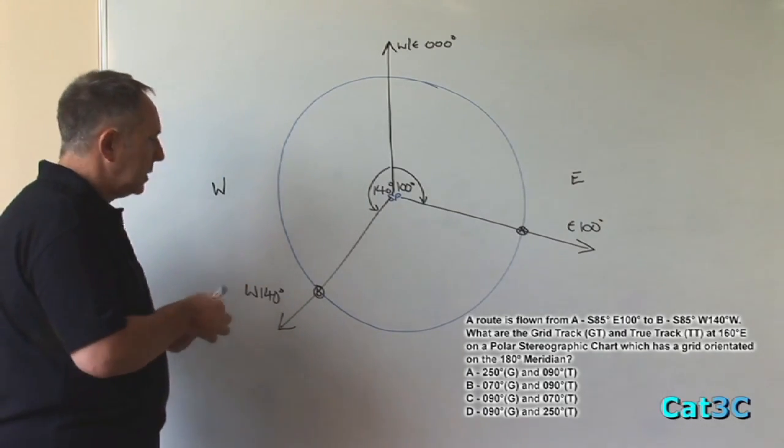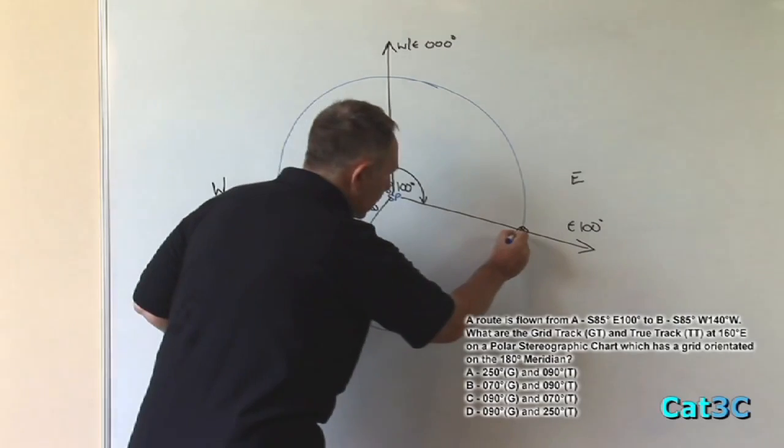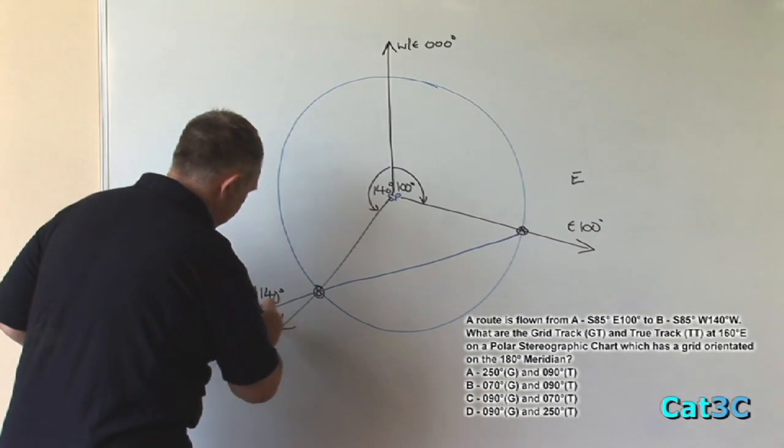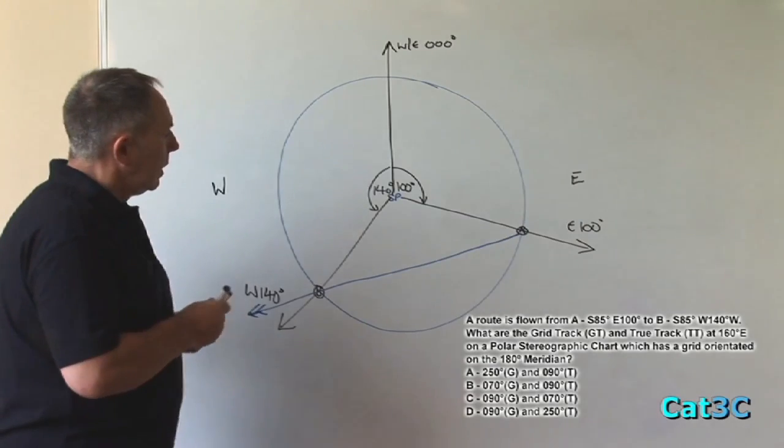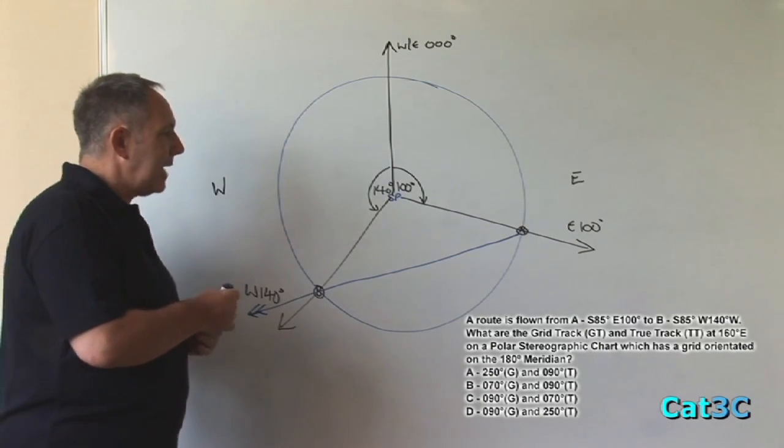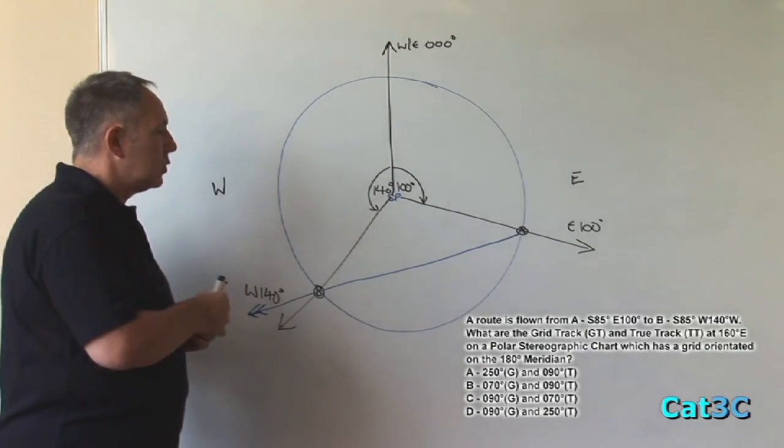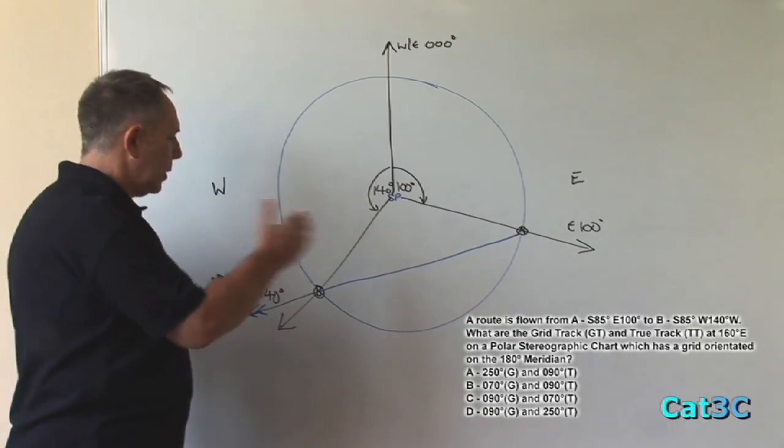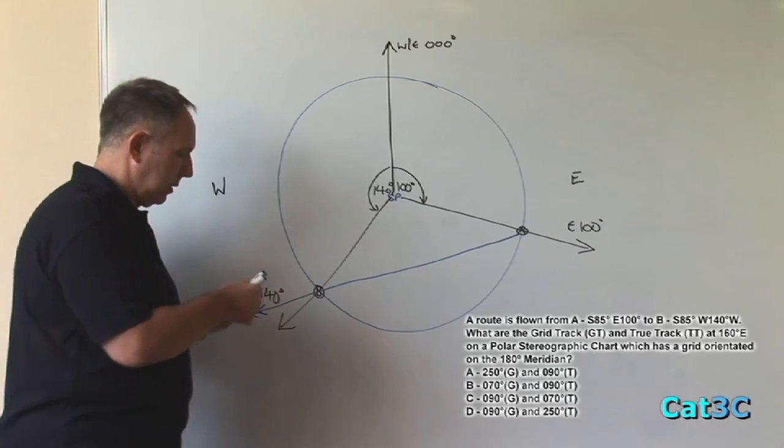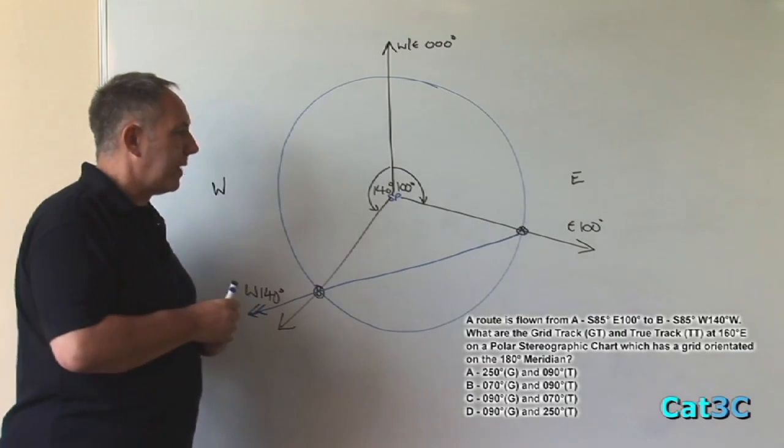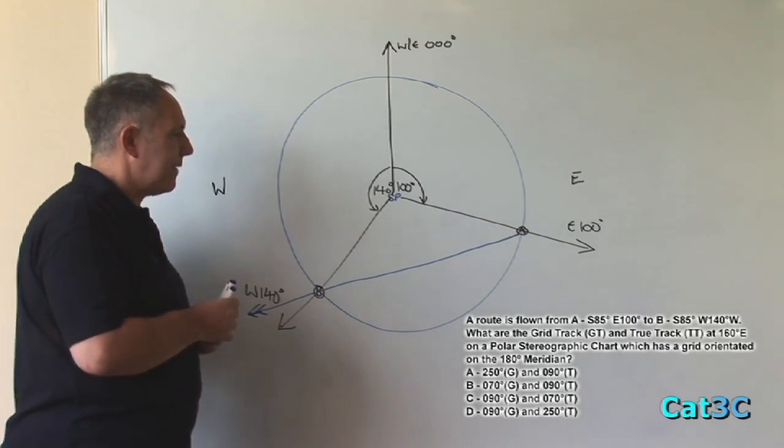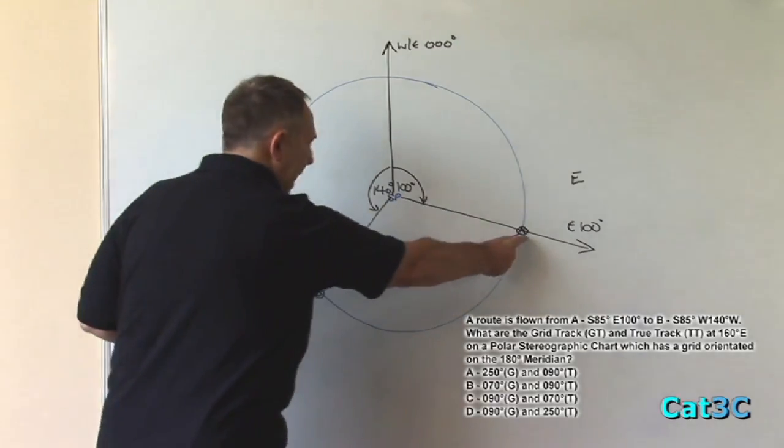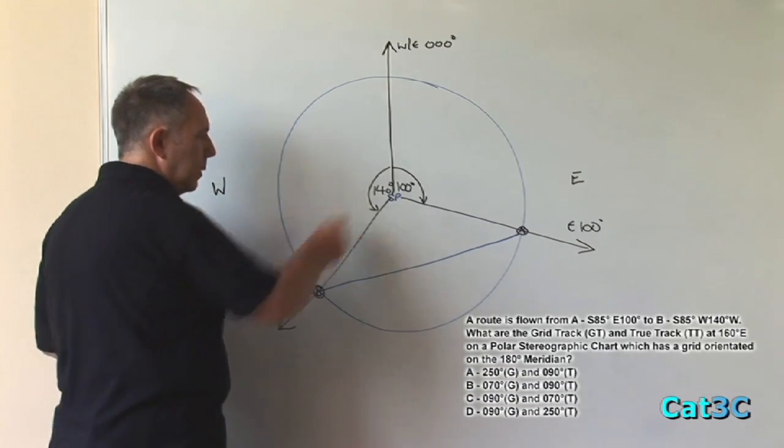The track line is going from A across to and through B, like so. What we have to do is calculate the value of the true track at 160 degrees east, which is between A and B. What I'm going to do before that though is I'm going to work out the values of the angles within the existing triangle. And that's the triangle formed by A, B and the south pole.